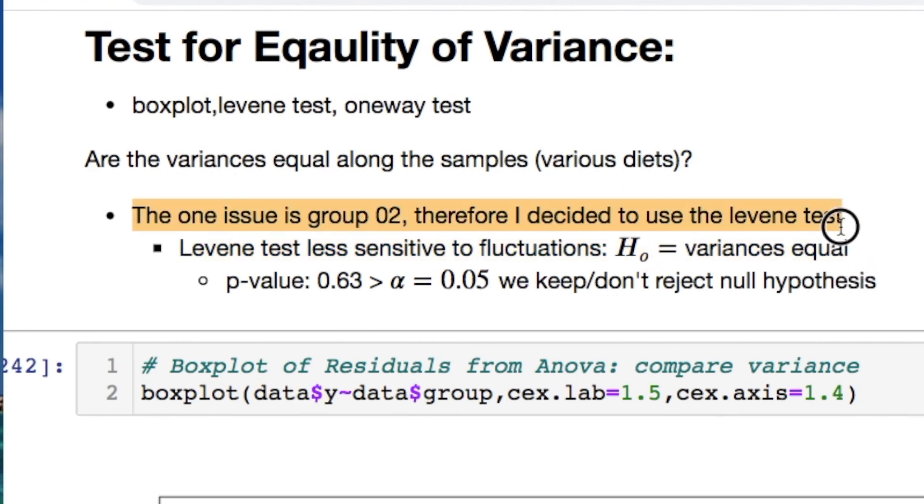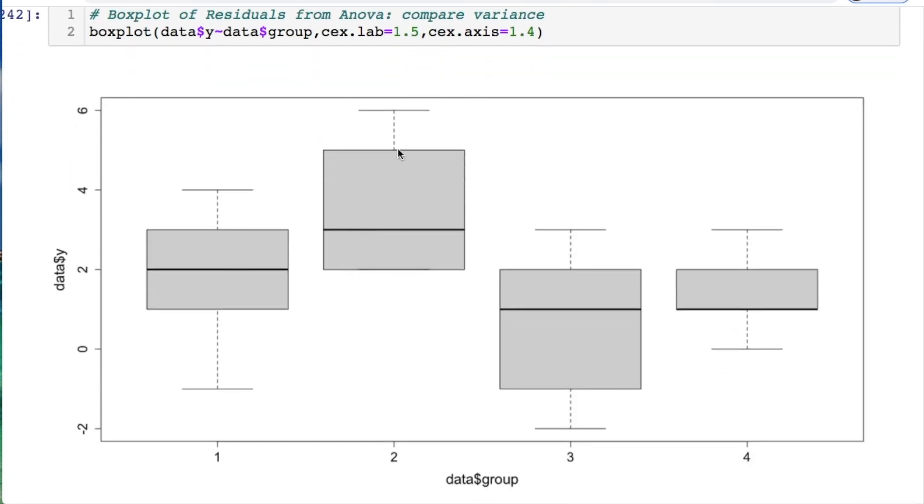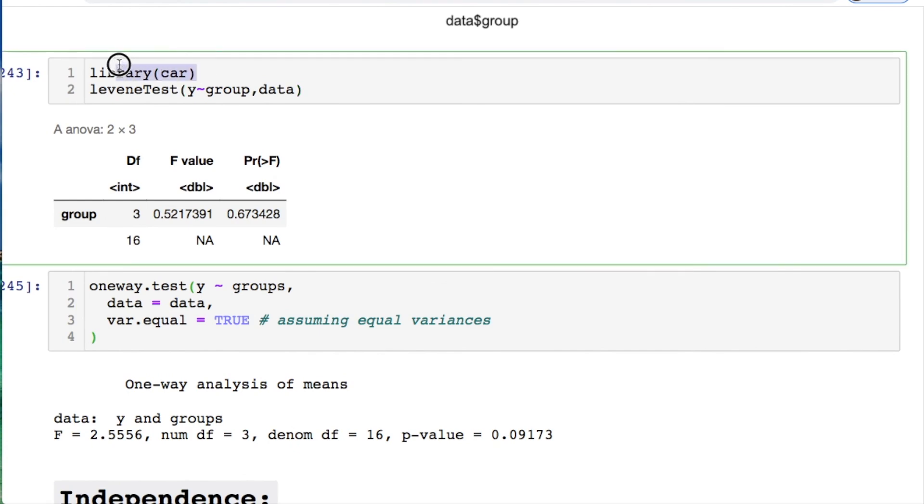And the Levene test is less sensitive to fluctuations for normality. It says that the hypothesis equals variance, equal variance. We'll end up with a pretty good probability value from the Levene test. Meaning that we don't reject the null hypothesis. This is the second group right here. You can see this bottom line isn't protruding. So we got kind of a little bit of issue. But otherwise the variances don't look too bad. Here's a Levene test. You have to import the car library to use it. You notice that we have a pretty good p value. Much higher than the alpha level. Therefore we keep or don't reject the null hypothesis.